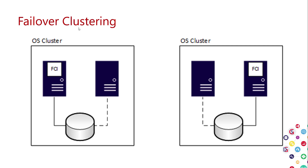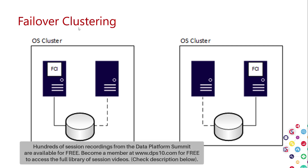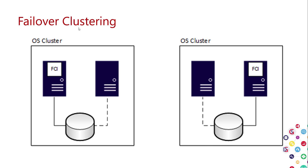Another class of solution is failover clustering — an OS entity that's been around for a long time, whether Linux or Windows. With a failover cluster instance of SQL Server, there's a primary and secondary node. The failover cluster instance runs on the first node with access to physically shared storage. The first node has ownership of that disk; the second node cannot access it — only one node at a time has access, arbitrated by the cluster.